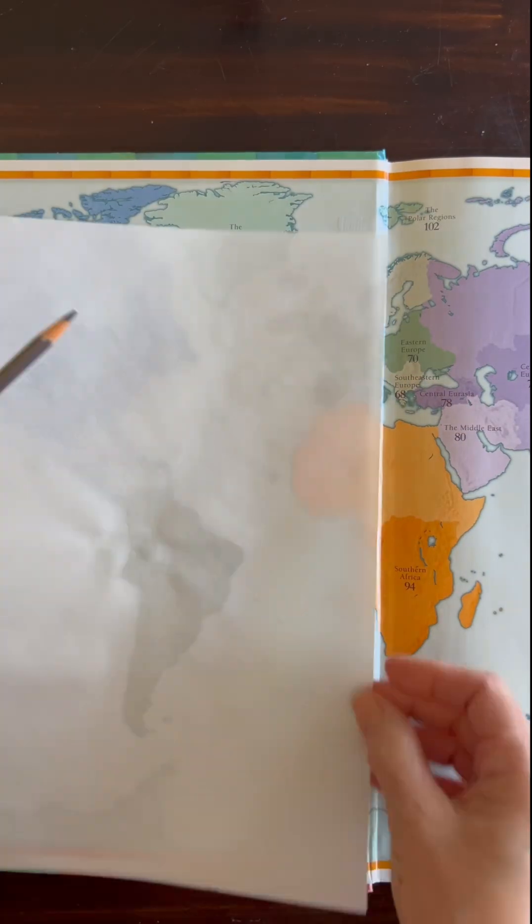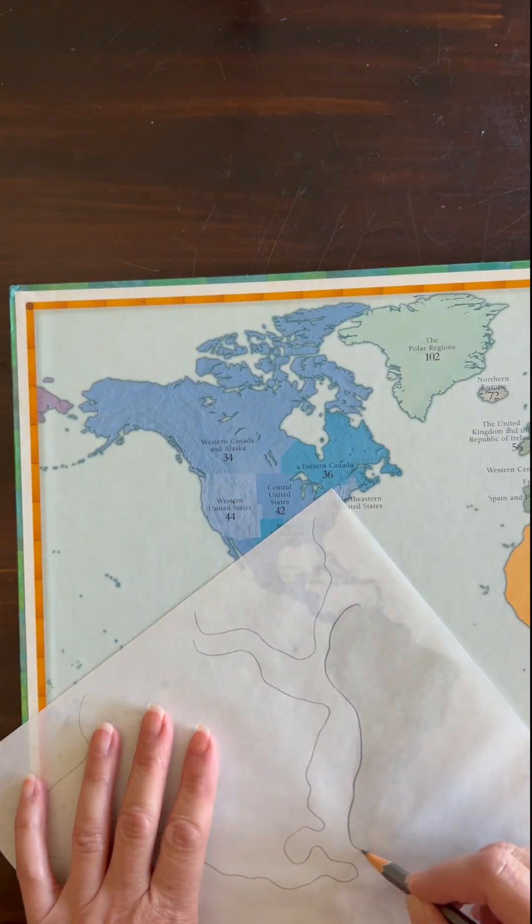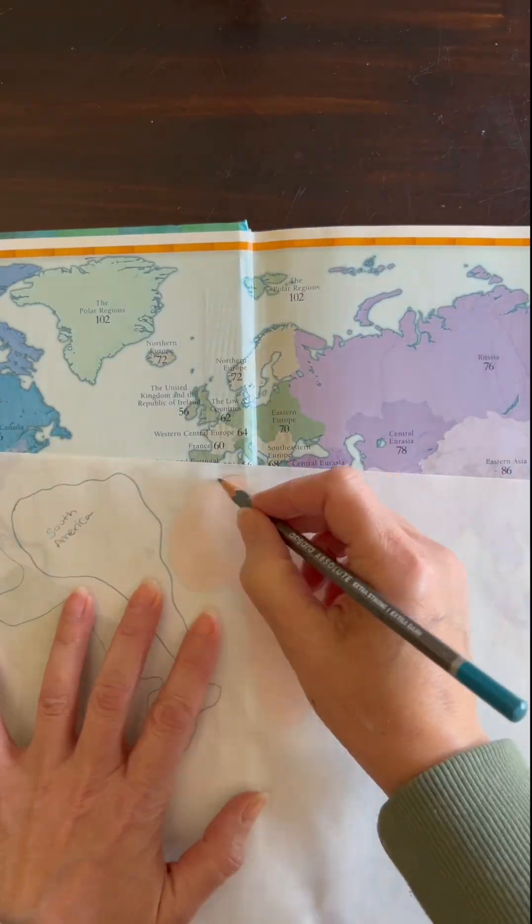For this lesson, I am using my atlas as well as some tracing paper and if you don't have tracing paper, you can use computer paper. You'll just need to print out your continents and then cut them out.